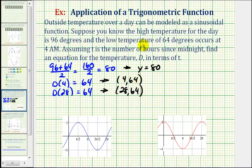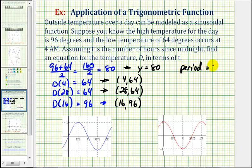And then finally, since the period is 24 hours, the max and mins must occur 12 hours apart. And since 4 plus 12 equals 16, this means D of 16 must equal the high temperature of 96 degrees. So our function must contain the point (16, 96), and we also said the period of our function must equal 24 hours.